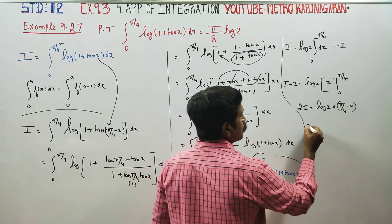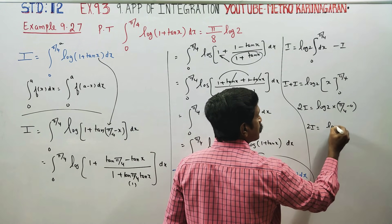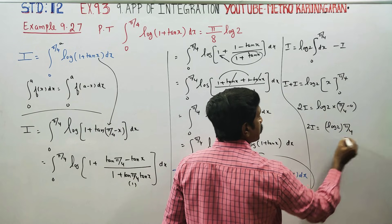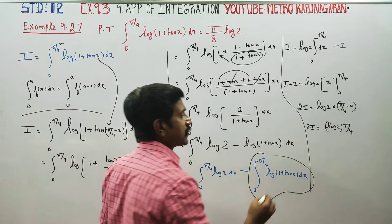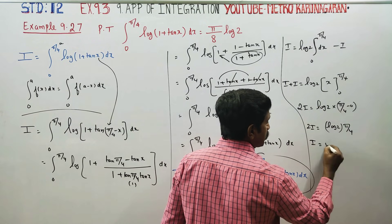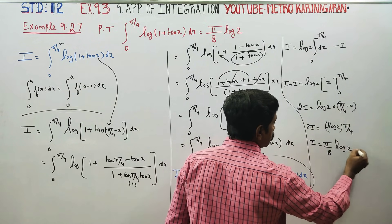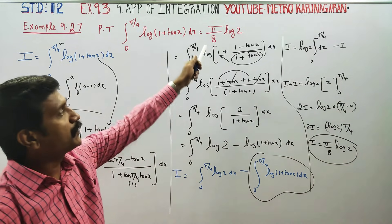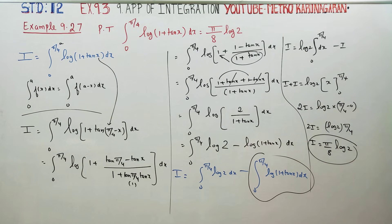So 2i is equal to logarithm of 2 into pi by 4. Dividing both sides by 2, i is equal to pi by 8 log 2. That is your ultimate answer: pi by 8 log 2. Thank you.